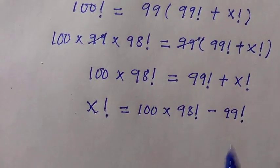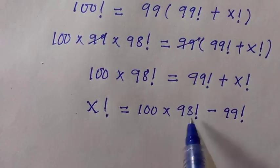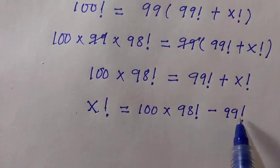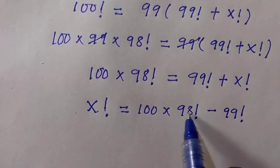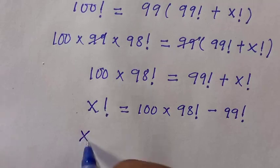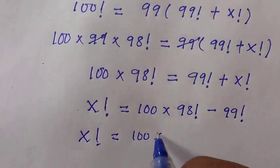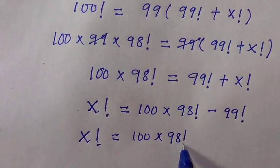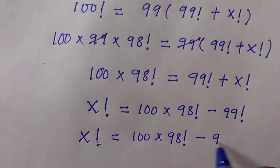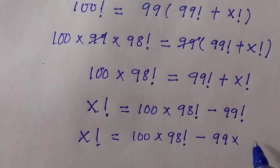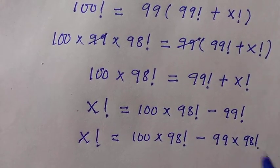This 99 factorial, we are going to break it down. When we are breaking it down, we stop at 98 factorial. Here we have x factorial equals 100 multiplied by 98 factorial minus 99 multiplied by 98 factorial.